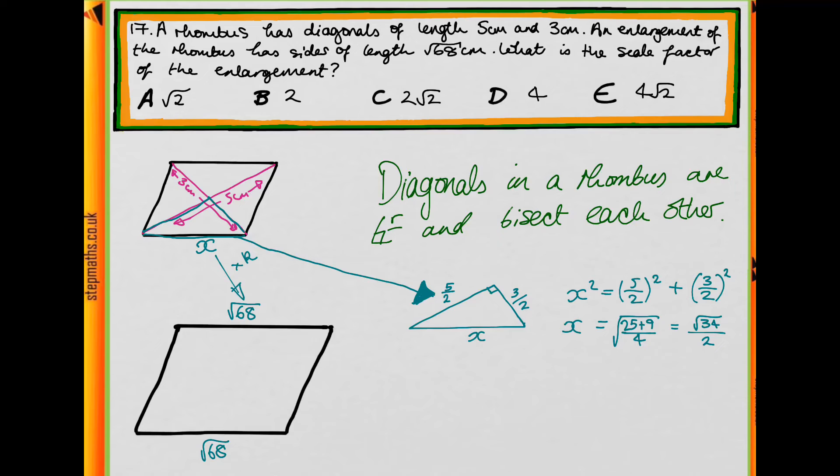Great, so now we've found X. So we know that X is our length of our side of our original rhombus. So once we have this, how can we then get to √68? You need to work out what K we need to multiply X by to get to √68. Pause the video and have a go at doing this now.